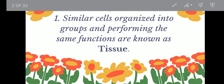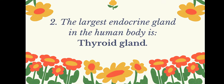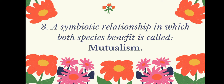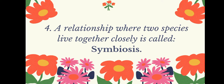Similar cells organized into groups and performing the same functions are known as tissue. The largest endocrine gland in the human body is the thyroid gland. A symbiotic relationship in which both species benefit is called mutualism.